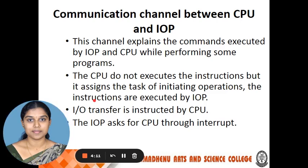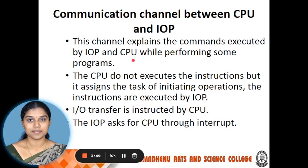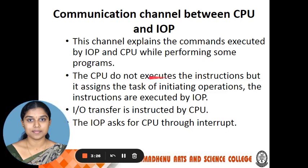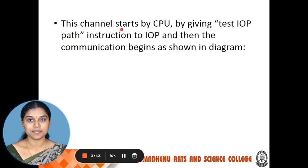The next topic is the communication channel between CPU and IOP. This channel explains the commands executed by the IOP and the CPU while performing programs. While the IOP is performing, the CPU initiates tasks to the IOP through an activated communication channel. The CPU does not execute the IO instructions itself but assigns the task of initiating operations. The instructions are executed by the IOP. The IOP is instructed by the CPU and the IOP can ask the CPU to interrupt. This channel starts with the CPU giving a test IOP path instruction to the IOP, after which communication begins.